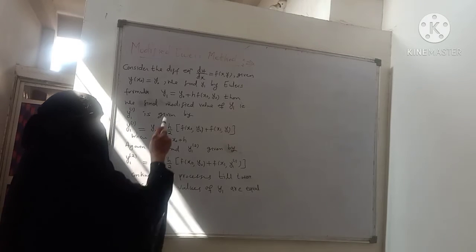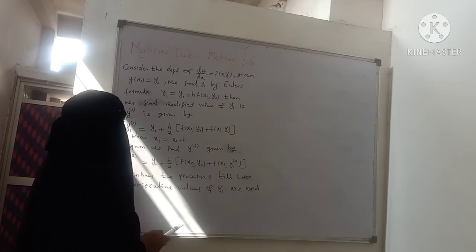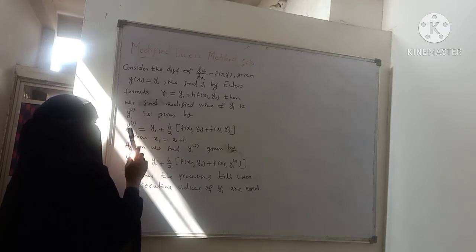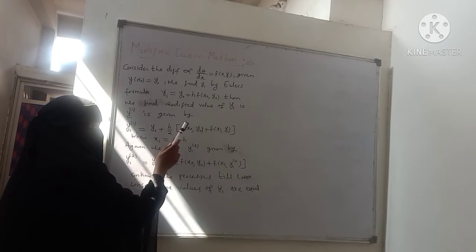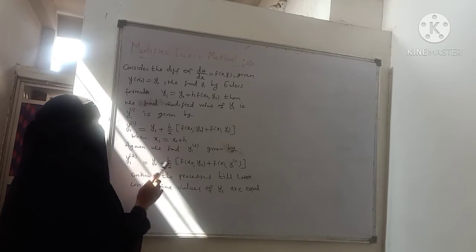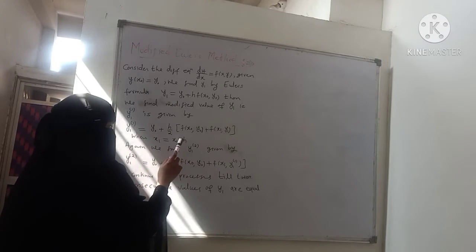Then we have to find the modified value, which uses the formula: y1 equals y0 plus h/2 times [f(x0, y0) plus f(x1, y1)], where x1